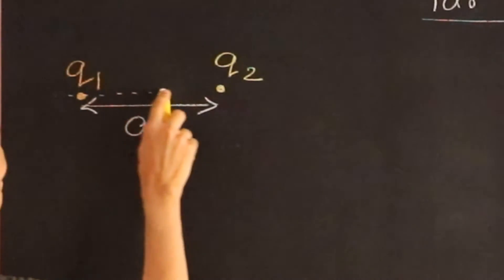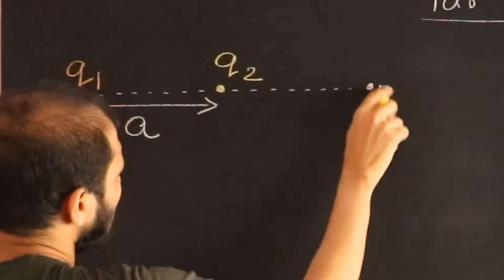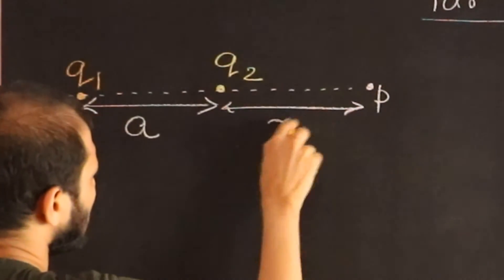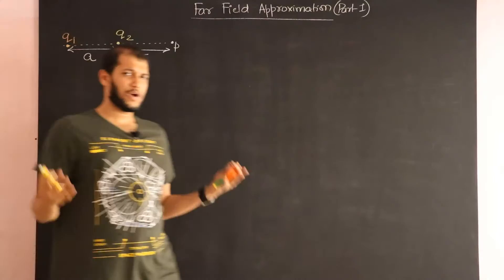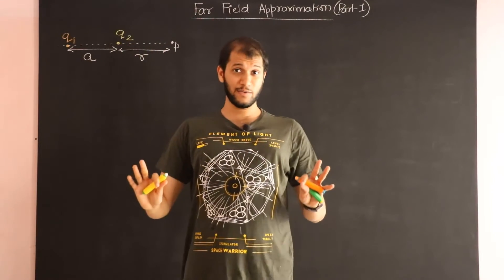let's say Q1 and charge Q2, separated by a distance a, and I am interested in calculating electric field at some point P which is at a distance R. By now you should know how to calculate that electric field. It's a one-dimensional case, very easy to calculate that.